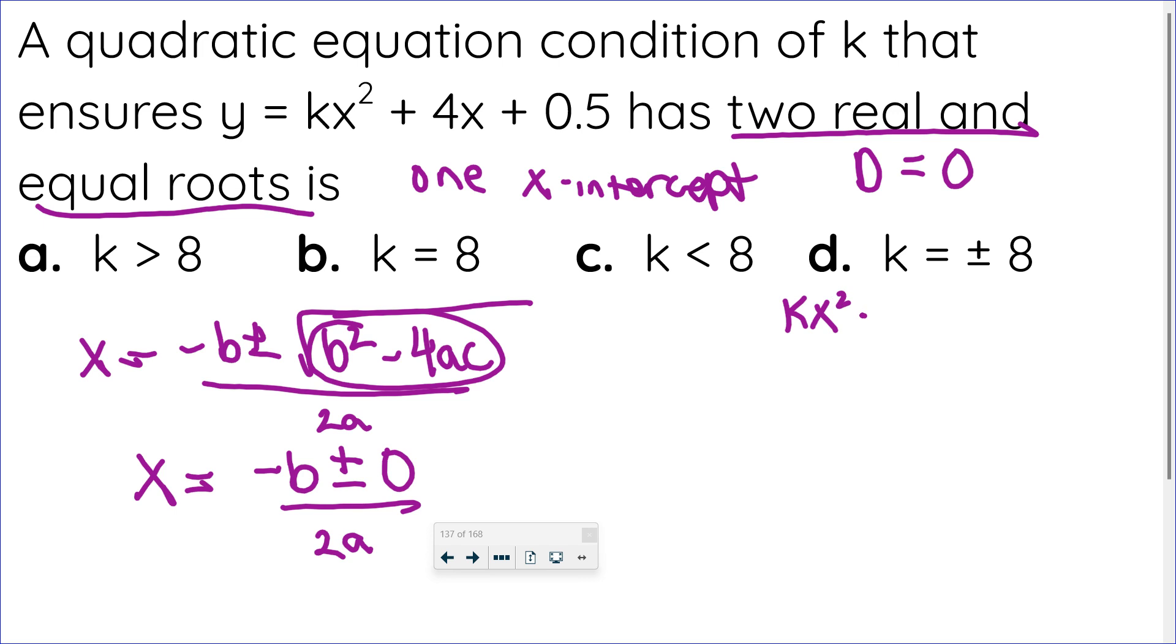So in terms of my equation, I have kx squared plus 4x plus 0.5. Let's look at that quadratic in standard form: ax squared plus bx plus c. So my discriminant we've already established has to be 0. The discriminant is the radicand of the quadratic formula.